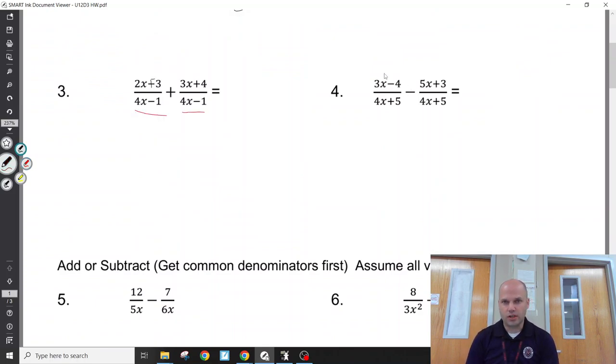I like to always change subtraction into add the opposite or using parentheses to help. Combine your like terms, 5x plus 1 over 4x minus 1. You're not allowed to simplify this. You're not allowed to cross off x's because of the pluses and the minuses in between. You'd have to turn things into products and cancel entire terms.